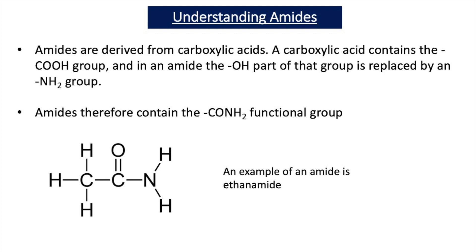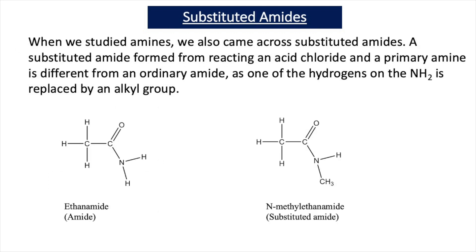We have an amide with two carbons, and this amide is named ethanamide. Earlier in the course when we studied amines, we came across the reaction of a primary amine and an acid chloride, and when those compounds react we form a substituted amide.